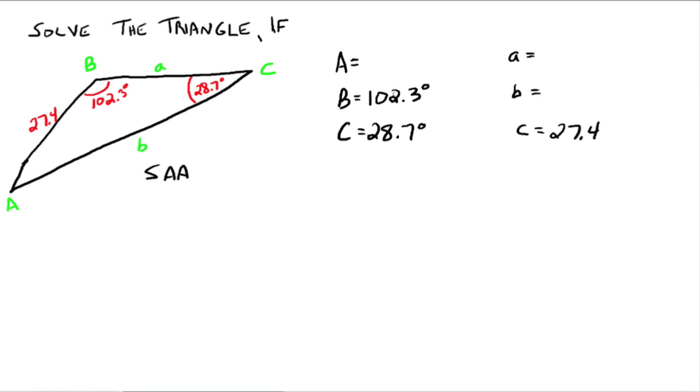A would be easy to find first because we know that all three angles in a triangle have to add up to 180 degrees. So A would just equal 180 degrees minus 102.3 degrees minus 28.7 degrees, which would just be 49 degrees.